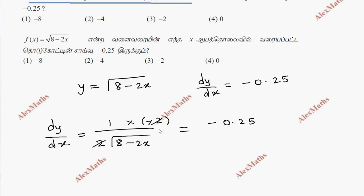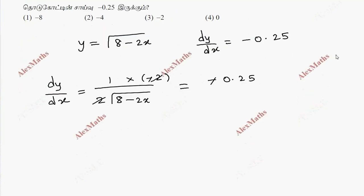So we can cancel minus 1. Balance: 1 by root of 8 minus 2x equals this. Convenient because 1 by 4 is 0.25.